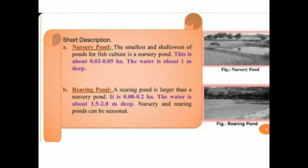First of all is the nursery pond, which is the smallest and shallowest pond for fish culture. It is called a nursery pond because of its small size, about 0.02 to 0.05 hectare, and the water level is just one meter deep — that is why it is shallow, also called a shallow nursery pond.